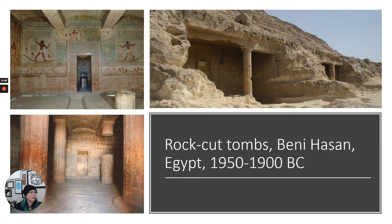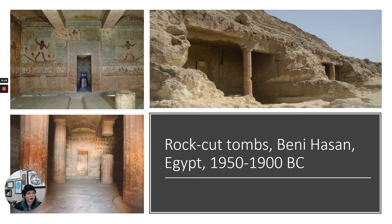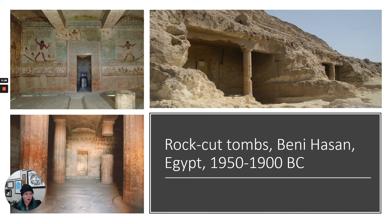This is Beni Hassan in Egypt, and this is basically a cemetery site — a necropolis, a city of the dead. Here, rather than building pyramids, the tombs are dug out of the cliff. They're carved into the rock of the cliff, which is pretty impressive. These columns are carved out and they're highly decorated on the inside with lots of frescoes — fresco secco means they're painted on a dry wall. Later, we'll talk about the difference between fresco buono and fresco secco.